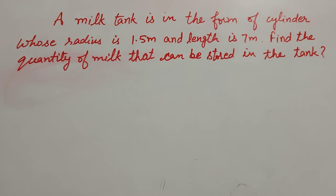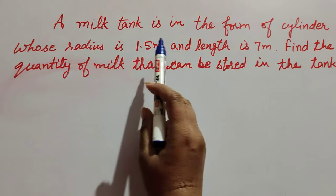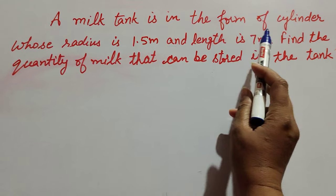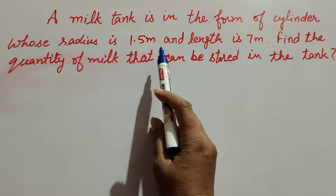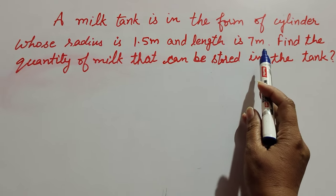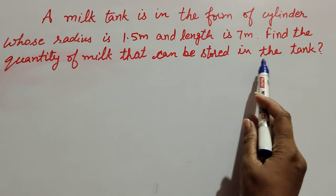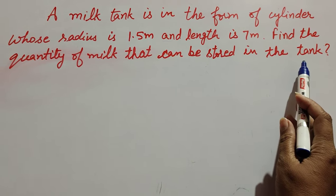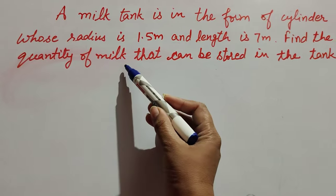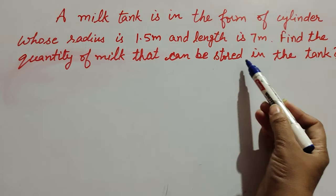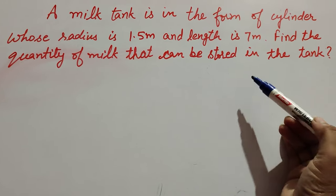Hello friends, welcome to my channel. In this video we discuss a milk tank in the form of a cylinder whose radius is 1.5 meter and length is 7 meter. We have to find the quantity of milk that can be stored in the tank.